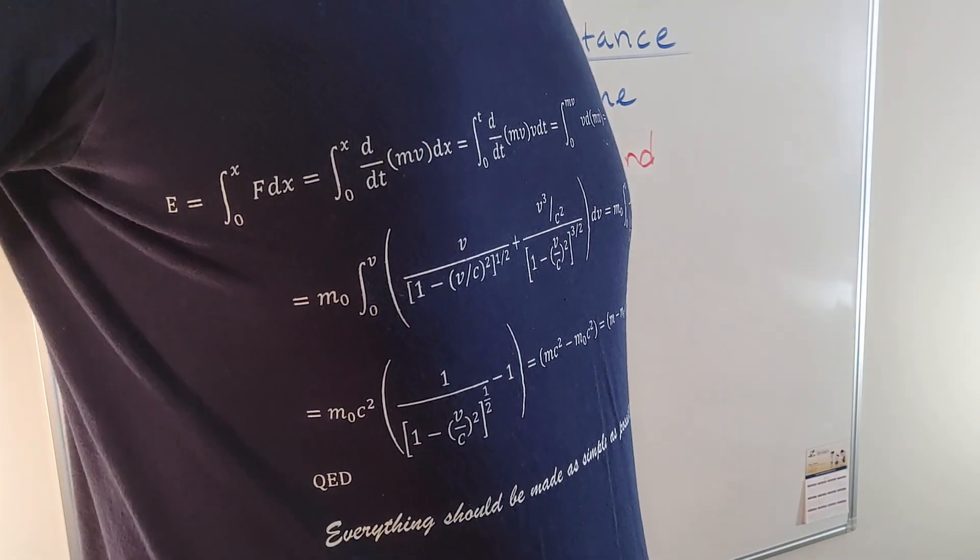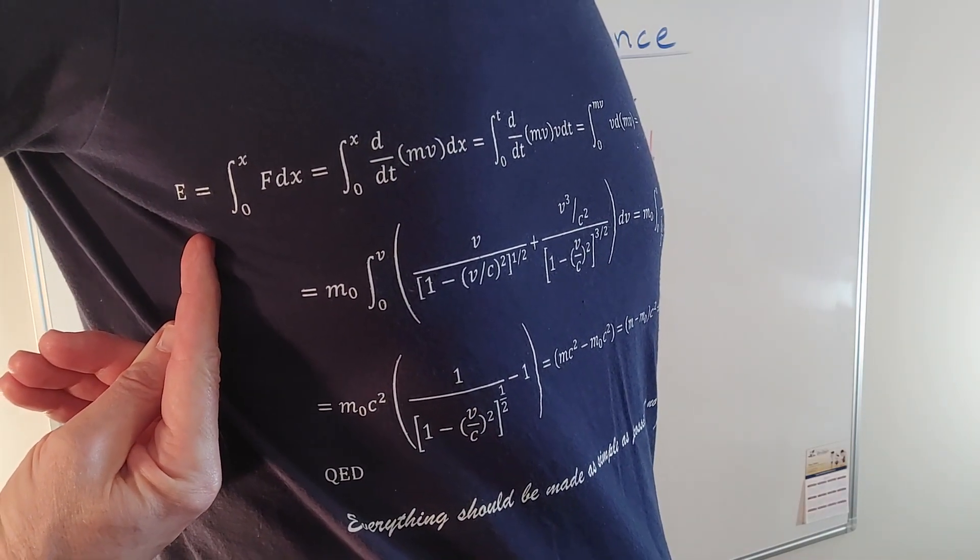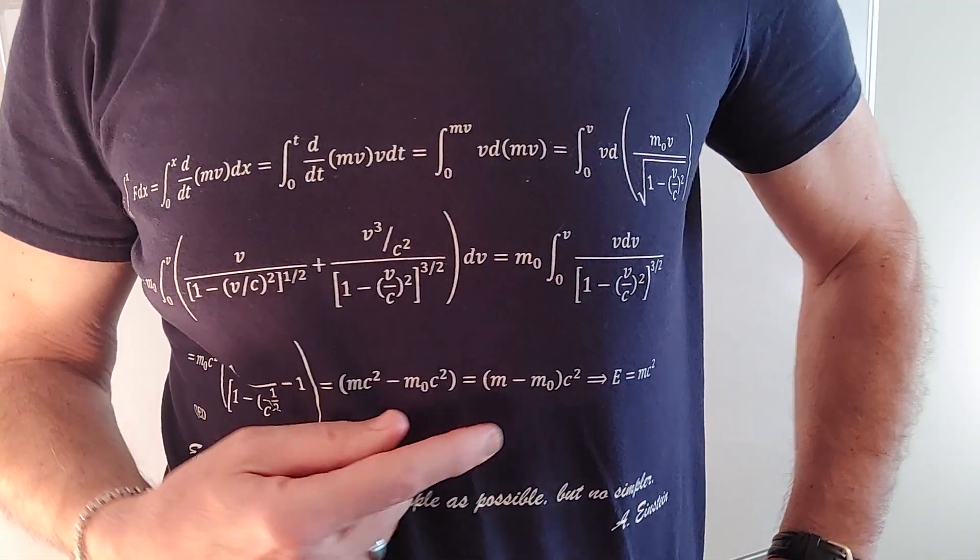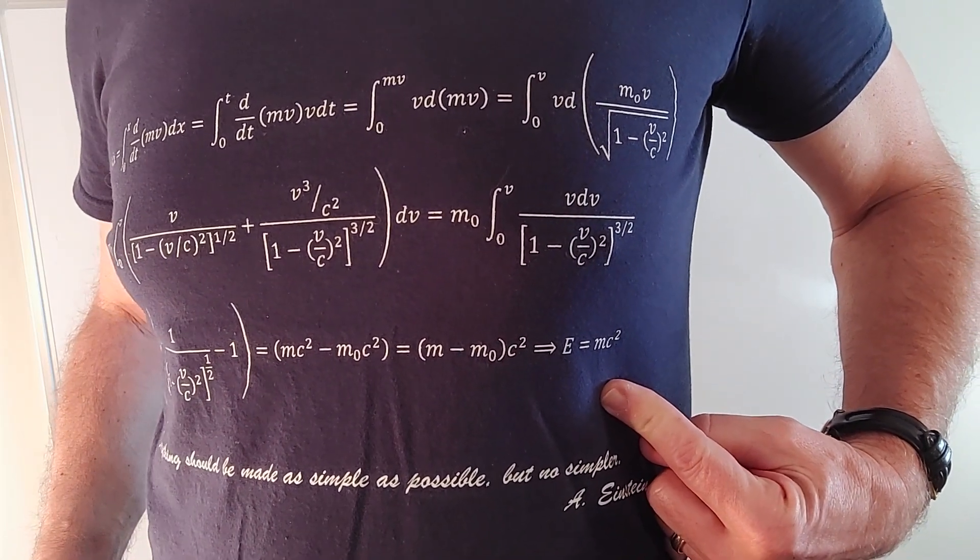But first, let's look at this complicated proof of E equals mc squared. There's the E. Here are three rows of calculations. And there's the conclusion, equals mc squared, by Albert Einstein.